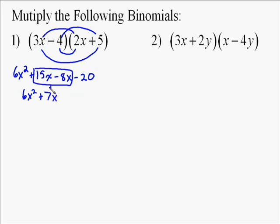The second thing is to add like terms. You can see that 15x minus 8x go together. They both have a term of x, and so 15 minus 8 is 7, so your final answer is 6x squared plus 7x minus 20. And you are done. You don't try to add anything else up. Nothing else is alike.